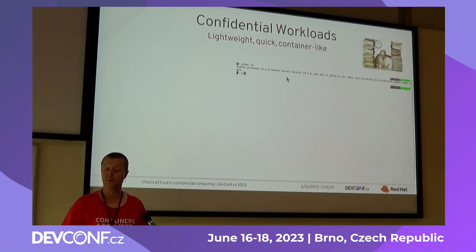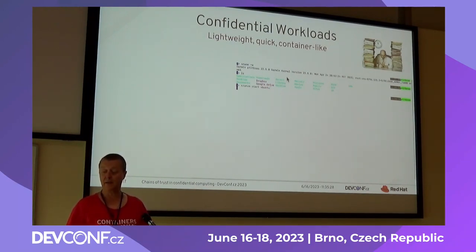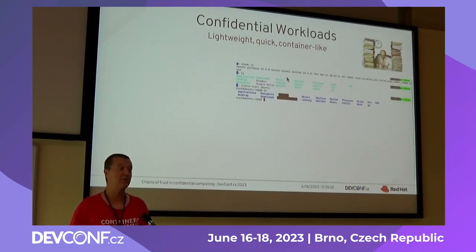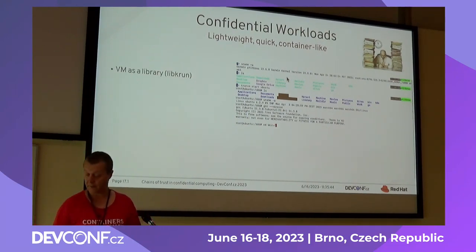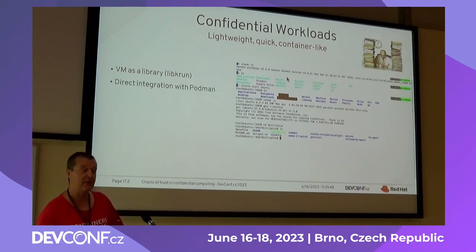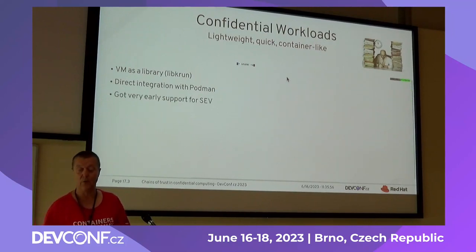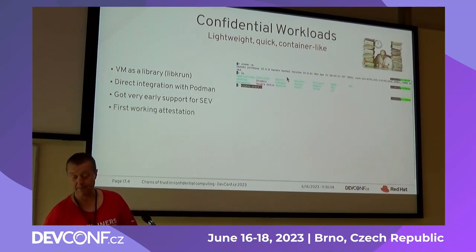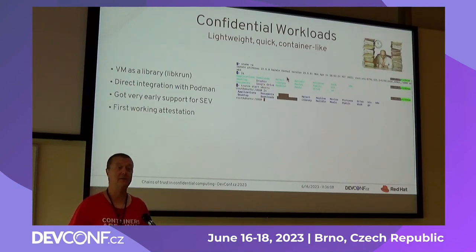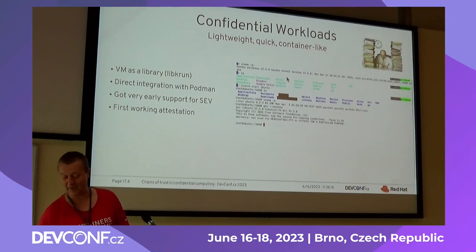For confidential workloads — simple functions — KataVM in action on this laptop runs containers very fast. A VM is exposed as a library to the host through a project called libkrun, with direct integration with Podman. That project got very early support for SEV compared to other projects discussed here, and was notably the first to do working remote attestation — interesting because confidential containers as a project had defined a protocol, but the KataVM project was the first to implement it.